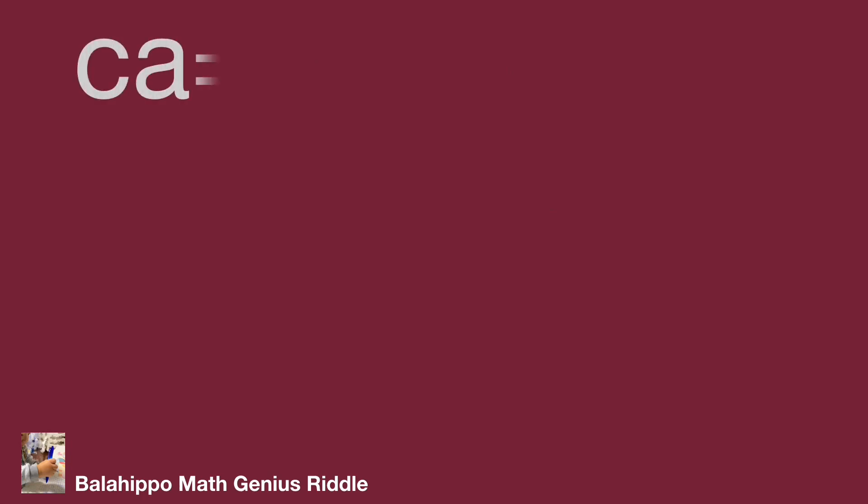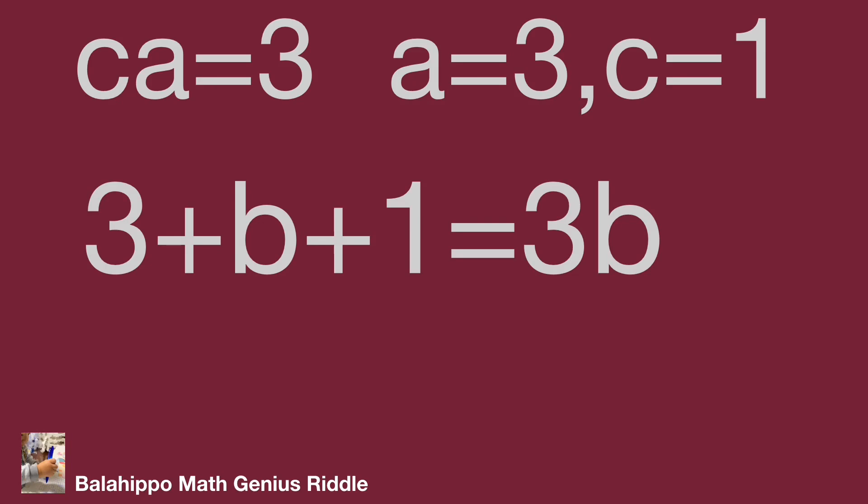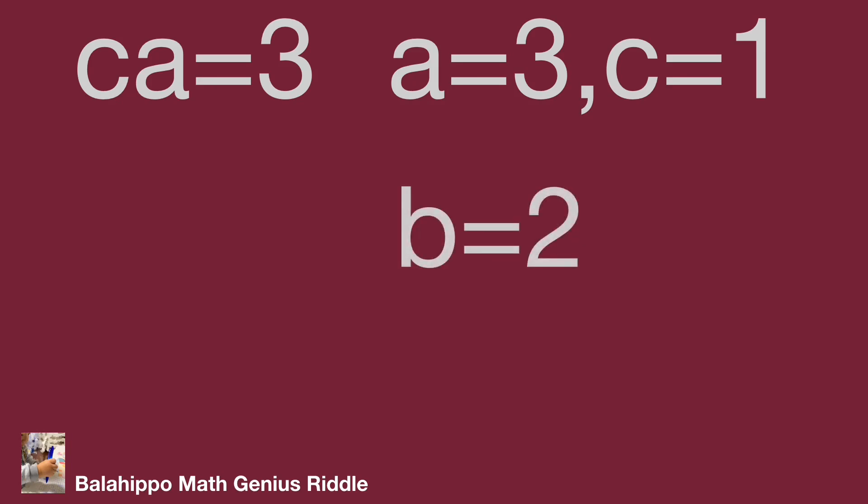When CA equal to 3, then A equal to 3, C equal to 1. Again, find B from the given equation: 3 plus B plus 1 equal to 3B, B equal to 2. But we defined B larger or equal to A larger or equal to C, so it is not the result.